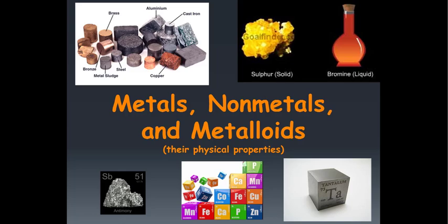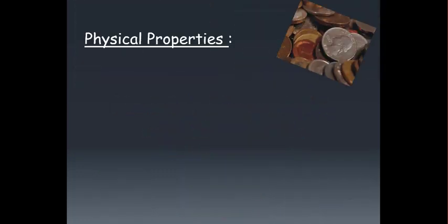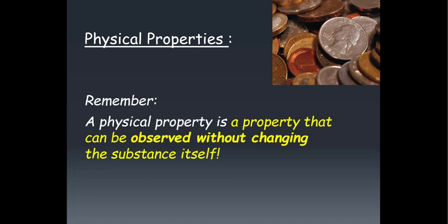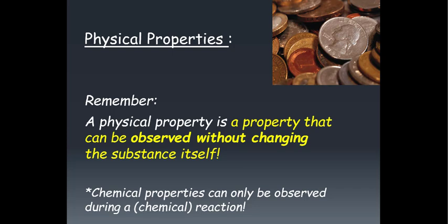So let's check out the physical properties of all these things. Let's start off this discussion of the physical properties of everything on the periodic table by first identifying what exactly a physical property is. Remember that a physical property can be observed without changing the substance itself. This is unlike chemical properties which can only be observed during a reaction.